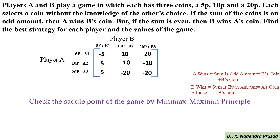Next, we check the saddle point using the minimax and maximin principle. We determine the row minimum values: first row minimum among -5, 10, 20 is -5; second row minimum among 5, -10, -10 is -10; third row minimum among 5, -20, -20 is -20. Among these minimums (-5, -10, -20), the maximum is -5. So the maximin value equals -5.